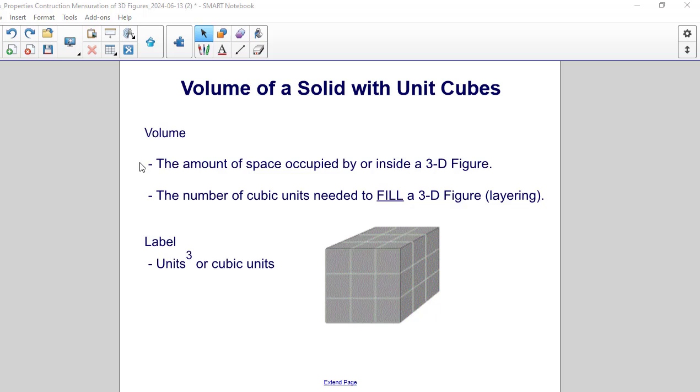A formal definition of volume is the amount of space occupied by or inside a three-dimensional figure. The number of cubic units needed to fill a three-dimensional figure by layering. So if you can picture, you have unit cubes that you're going to fill the bottom of the box with and then layer those unit cubes up until you reach the top of the box.